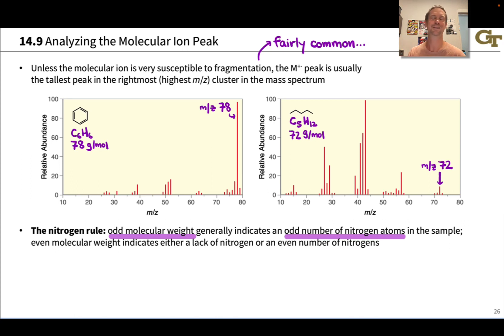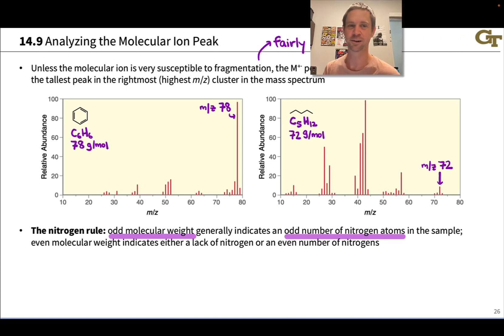There are other elements that we see in organic compounds with odd molecular weight - chlorine and bromine come to mind. But we're going to detect these elements using a different approach based on isotopes, as we'll explain here in a second.